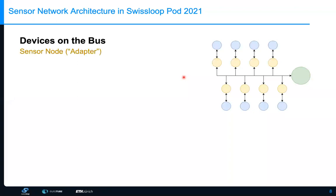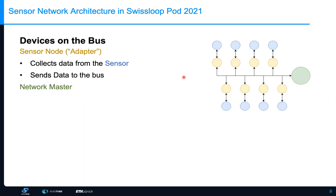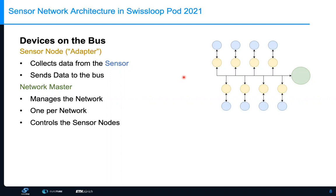There are different devices on the bus. The first is the adapter, which translates sensor data to a common communication protocol for the bus, collects data from the sensor, stores it, and then sends it on the bus. The second device is the network master, which controls everything on the bus — it handles who can send data, configures everything, and there is one master per network. The network master is also responsible for controlling and configuring the sensor nodes.